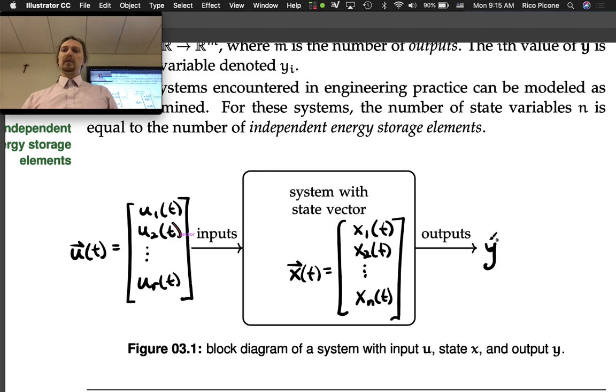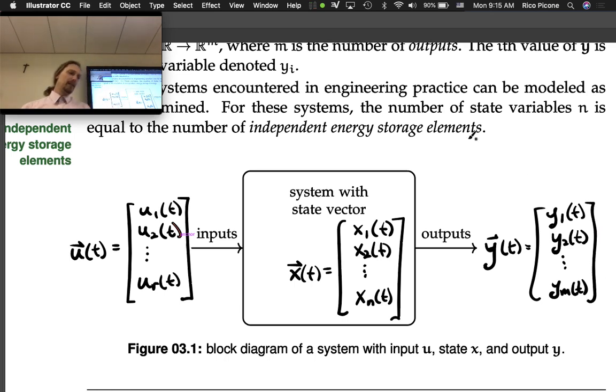Our output vector-valued function y(t) equals y_1(t), y_2(t), down to y_m(t), where there are m outputs. That's our picture: inputs coming in, state vector keeping track of the state of the system, and the outputs in an output vector.